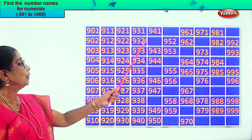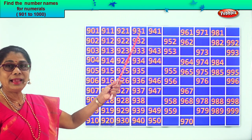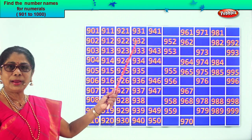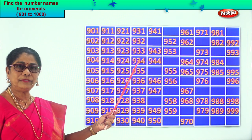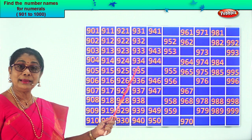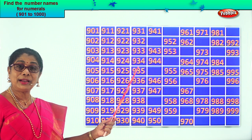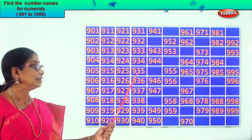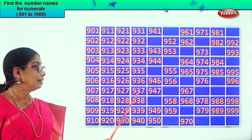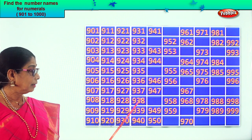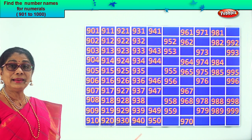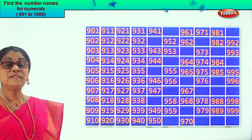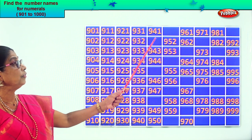Let's say together: 931, 932, 933, 934, 935, 936, 937, 938, 939, 940.